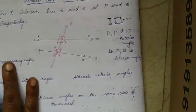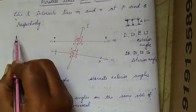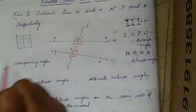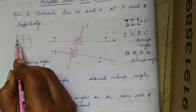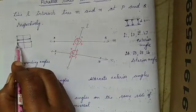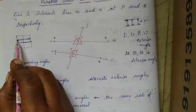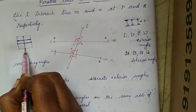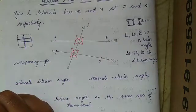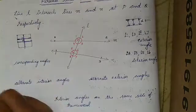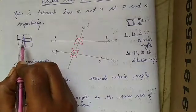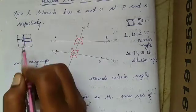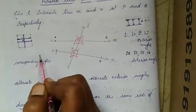Let us take a daily life situation — let us take a window of a house. Let us assume this is the window of a house. The rods present here are the parallel lines, because the distance between them will be equal. And the cross rod is a transversal line. At each intersection point, the angle formed will be 90 degrees. When these angles are equal in the parallel lines, these two angles are called corresponding angles.